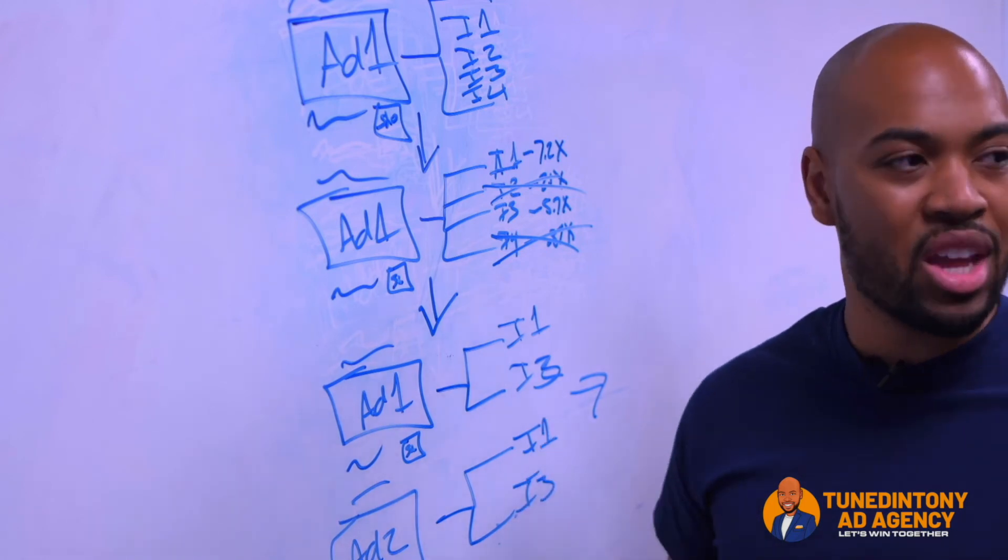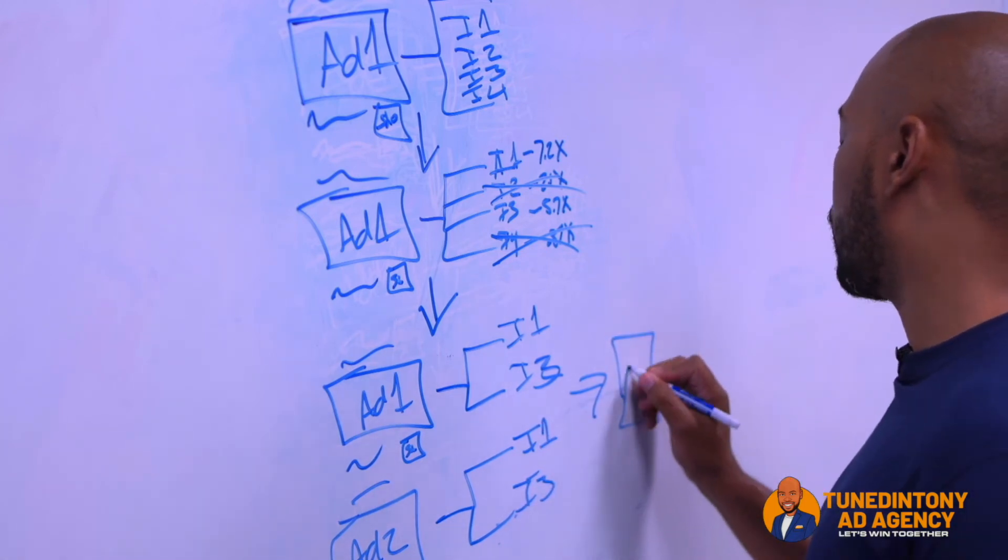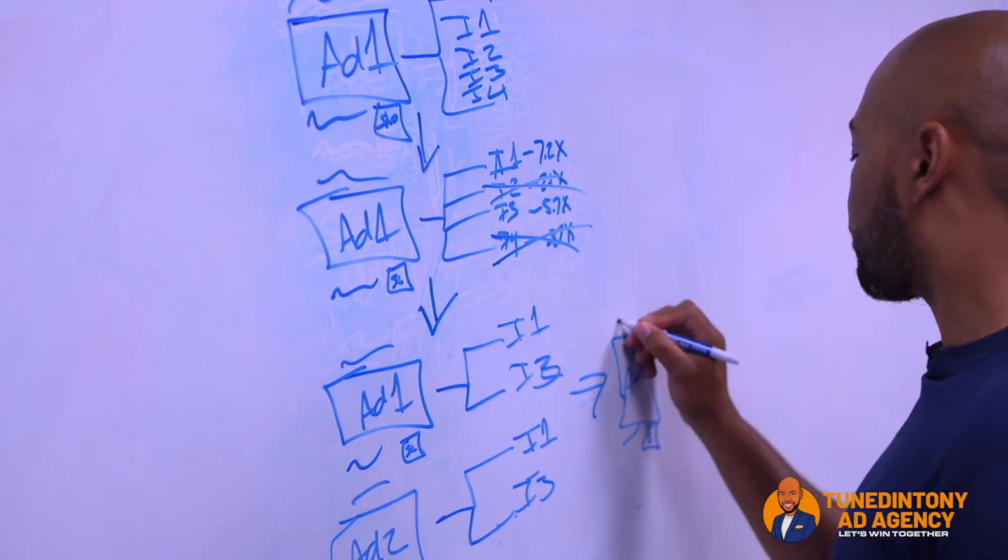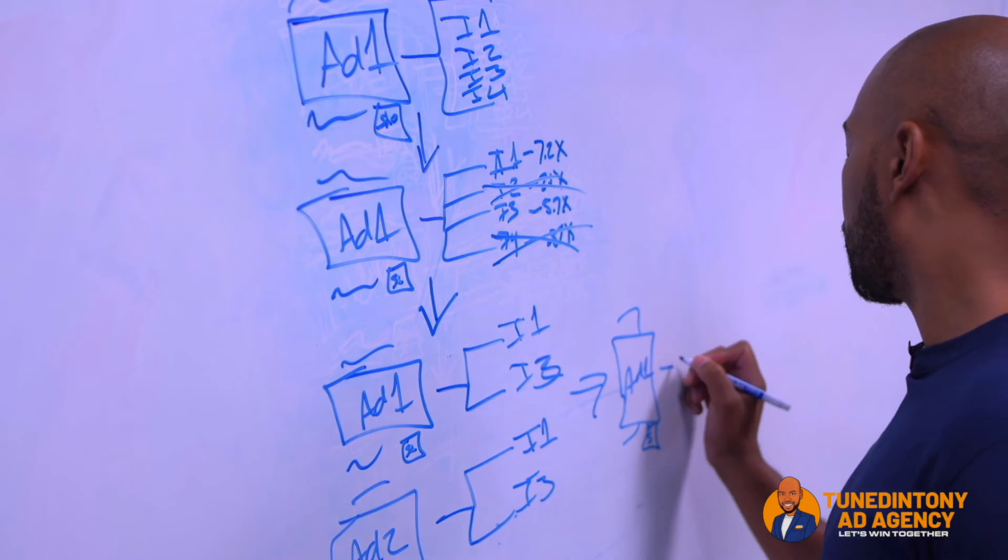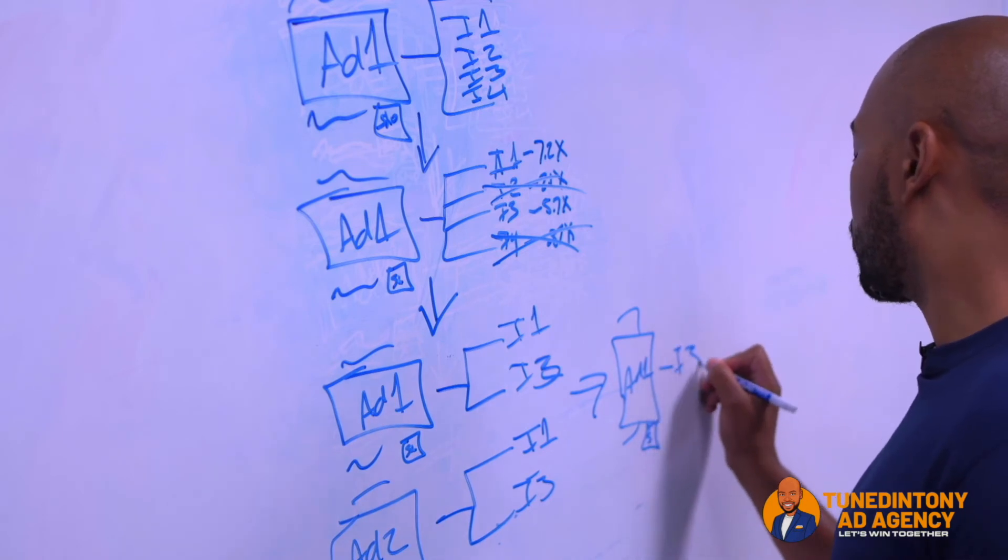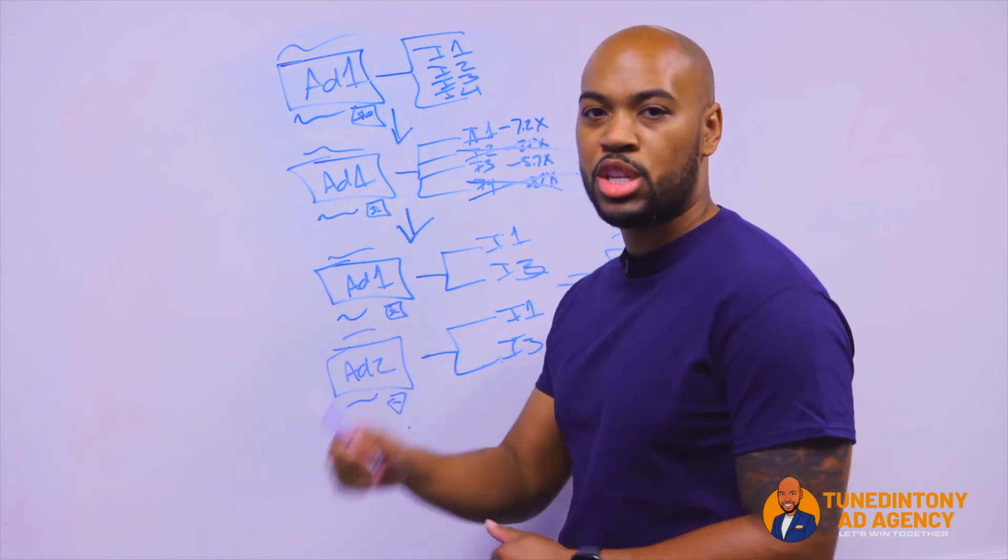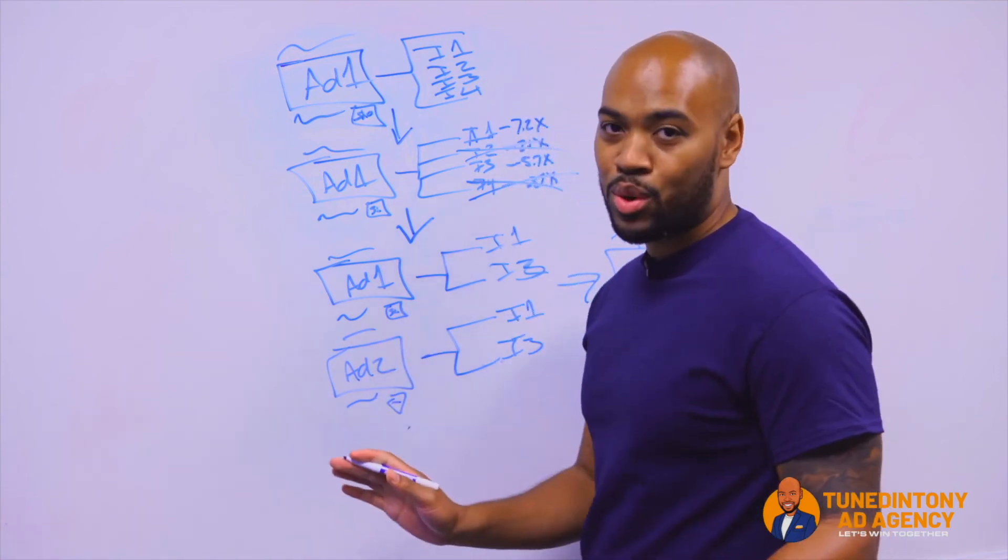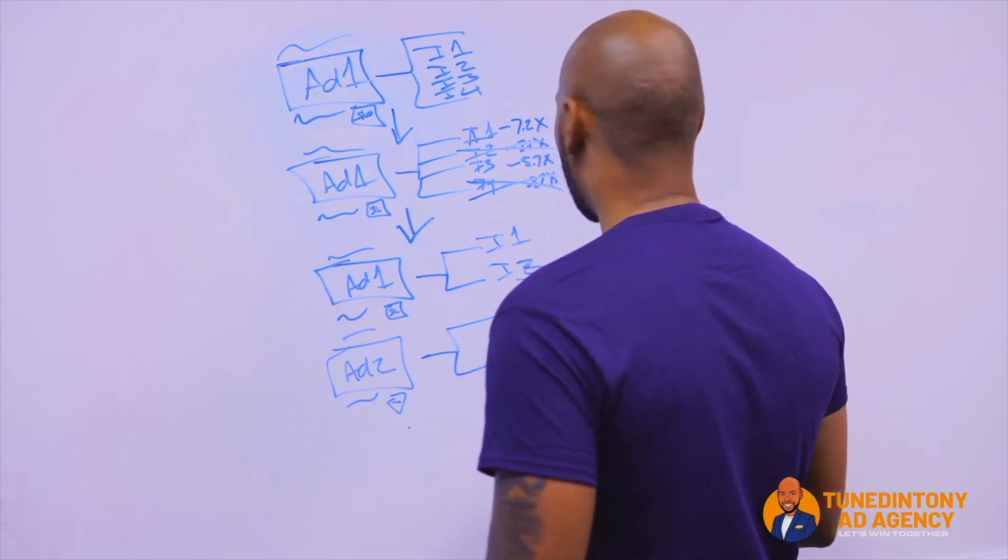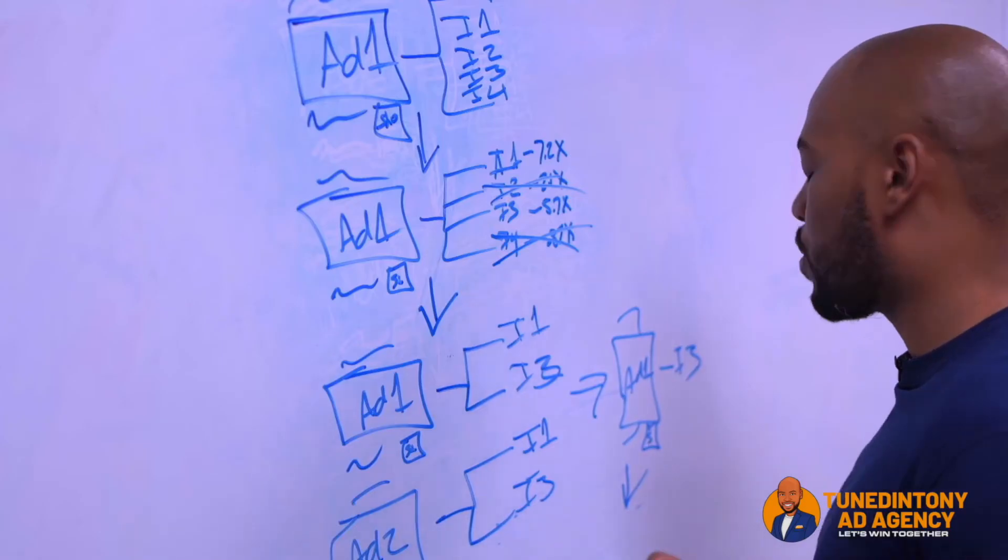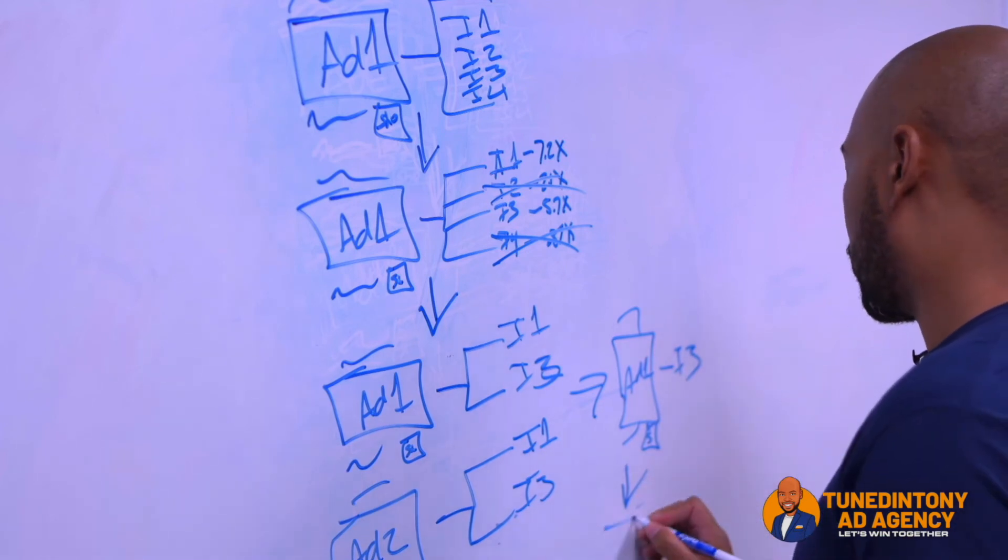So let's say ad one won, but interest three performed best. So now that we know this combination of ad one and interest three is the best performing ad for the business, but that's not where we're done yet. So we're going to leave that one running, and now we're going to duplicate our winning ad from a downward vertical once again, which was ad one.